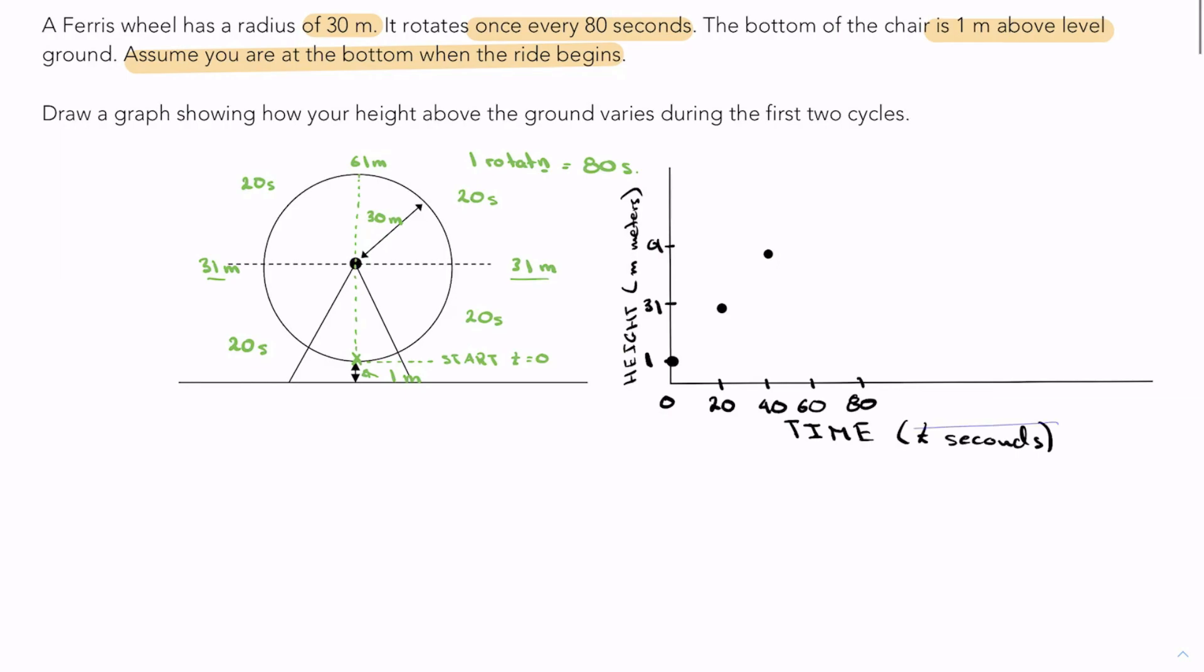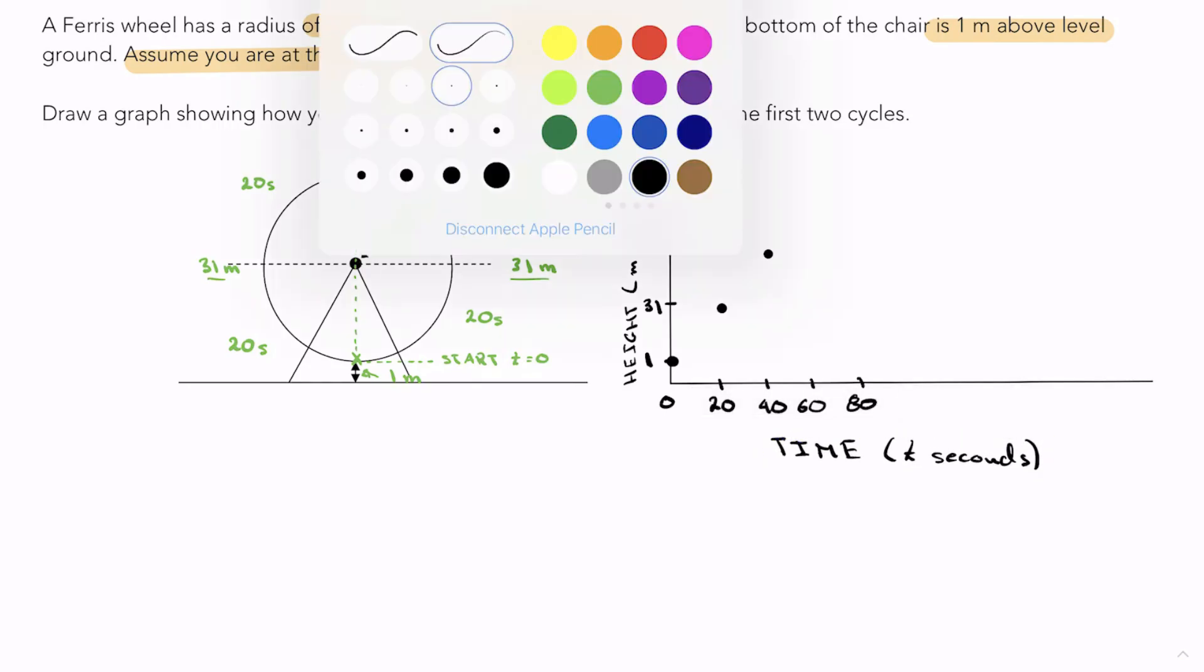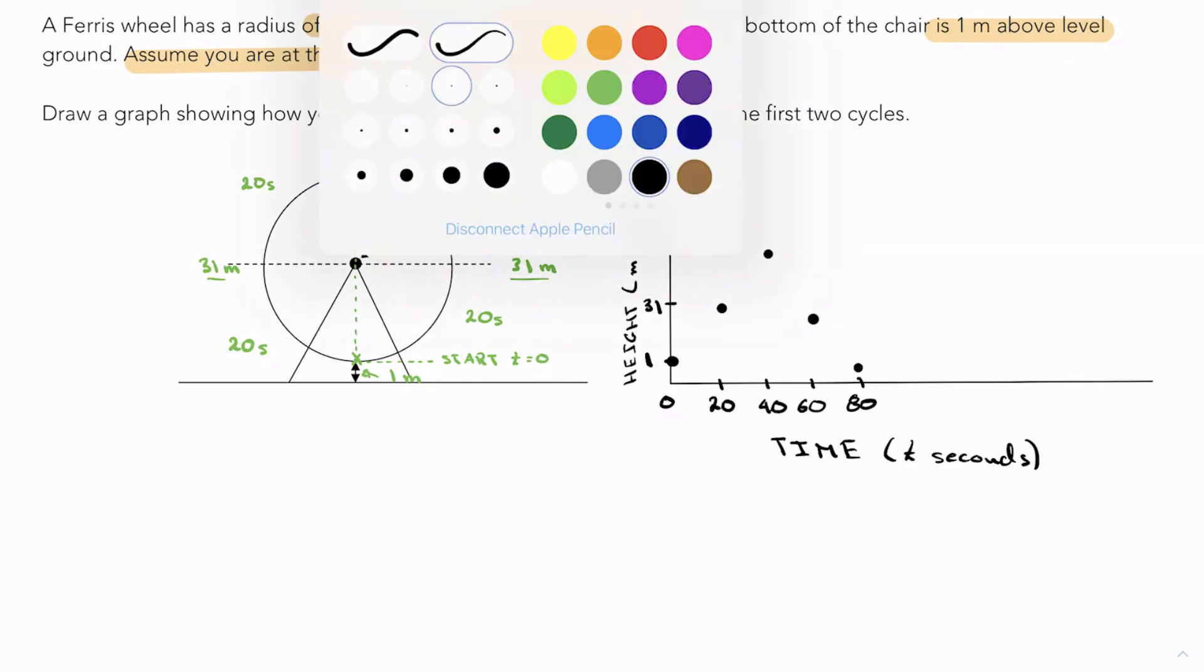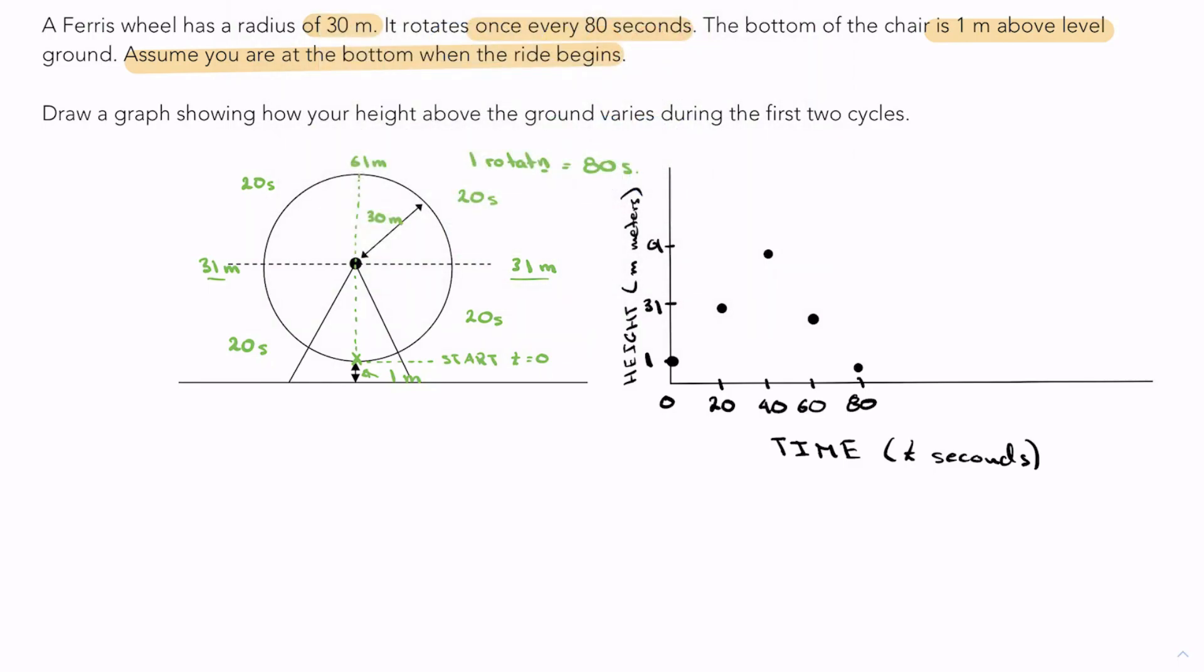Let me move this guy down even more. The points are going to be over here and over here. So what do I get when I connect this as a smooth line? I go up and I come back down.